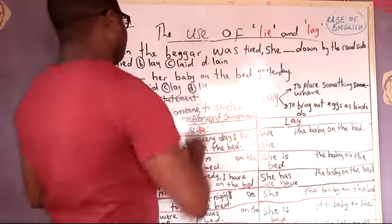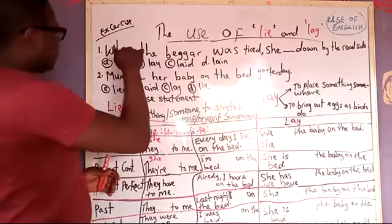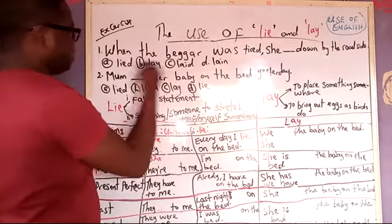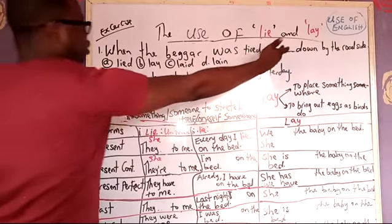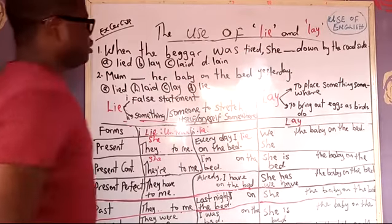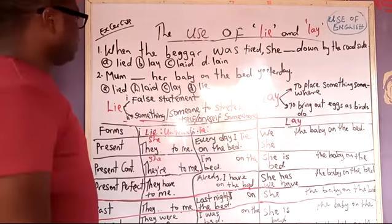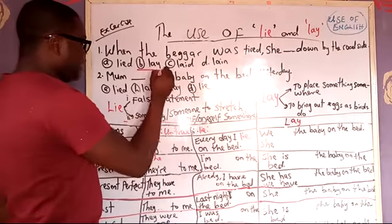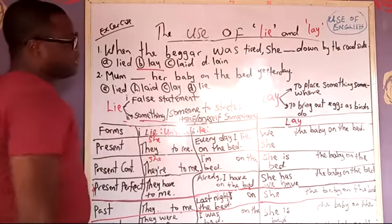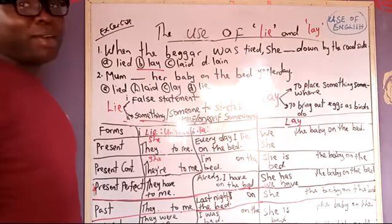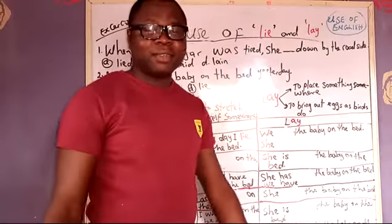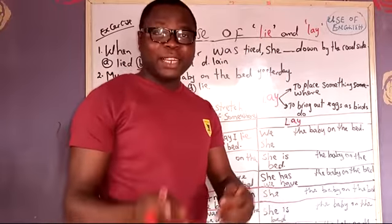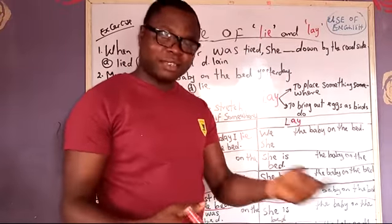The options are: laid, lay, lain. In this context we are looking at the past tense. We need a past tense of the action here. Consider option B as the answer: lay. That's the past tense. Now you wonder, why lay? We will get to know why it's lay once we understand the meaning of lay.